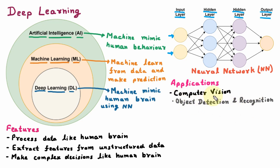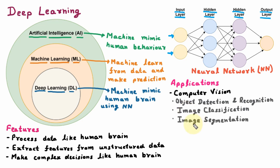The next application under Computer Vision is Image Classification. Here, the image is given to the computer and the computer categorizes the image — like Animal, Plants, and various other objects. The next application under Computer Vision is Image Segmentation. Here, the image is given to the computer and the computer finds the regions out of that image. These are the three applications of Deep Learning which come under Computer Vision.